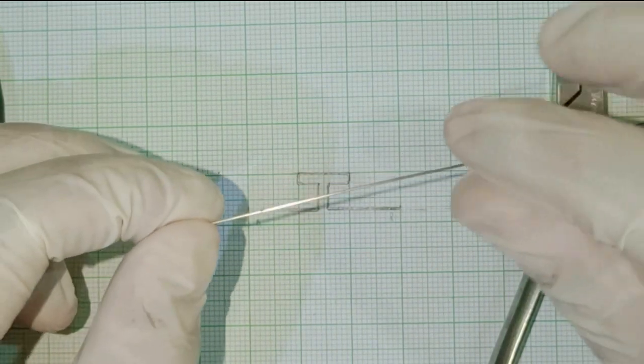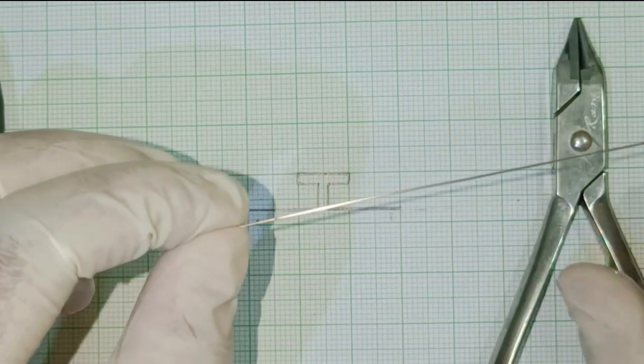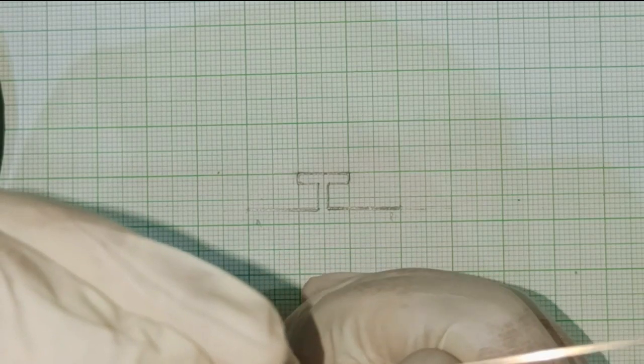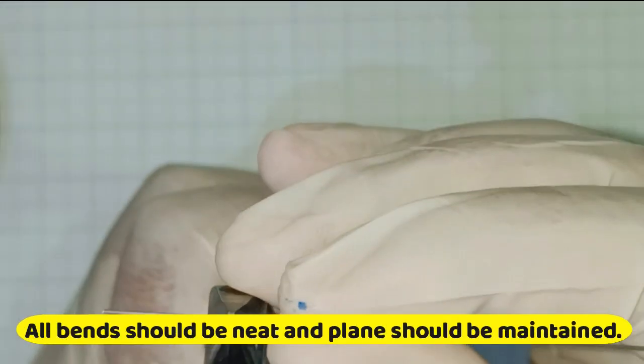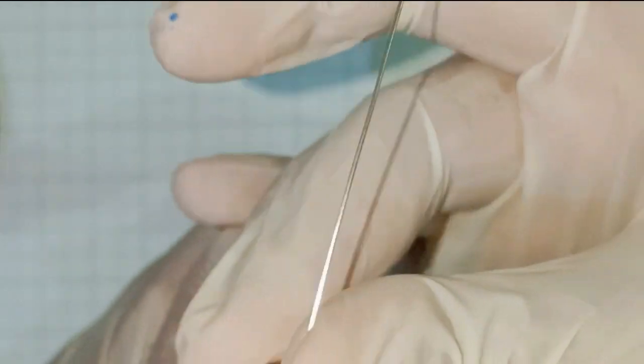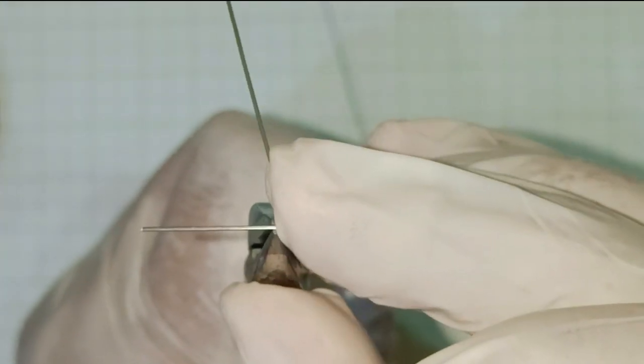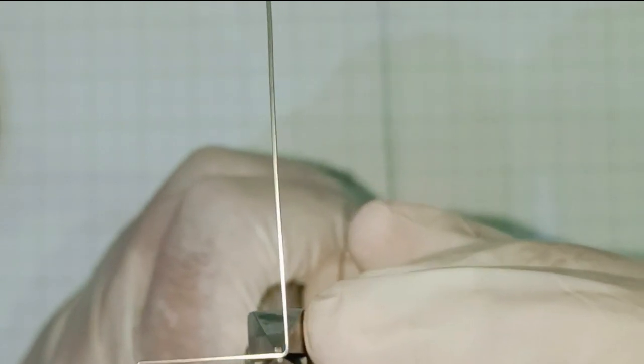So we are making a T-loop, the ideal T-loop given by Burstone in a TMA wire using a light wire plier. First of all give an upright bend, 90 degree bend in the wire. Whenever we bend the TMA wire it tries to come back to its original position because of its resiliency. So keep that in mind and always try to over-bend it. Then it comes back to 90 degrees.